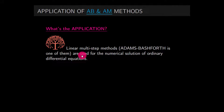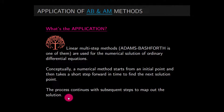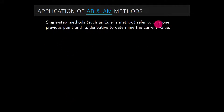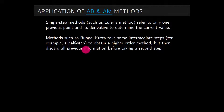Linear multi-step methods are used for the numerical solution of ordinary differential equations. Conceptually, a numerical method starts from an initial point and then takes a short step forward in time to find the next solution point. The process continues with subsequent steps to map out the solution. Single-step methods such as Euler's method refer to only one previous point and its derivative. Methods such as Runge-Kutta take some intermediate steps — for example, a half step — to obtain a higher order method but then discard all previous information before taking a second step.